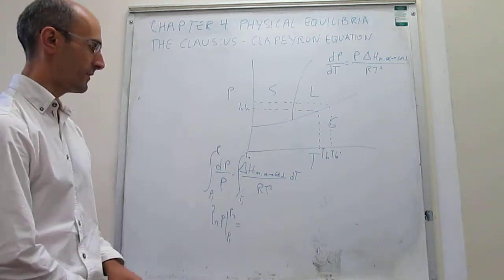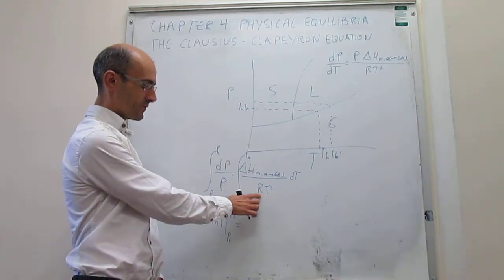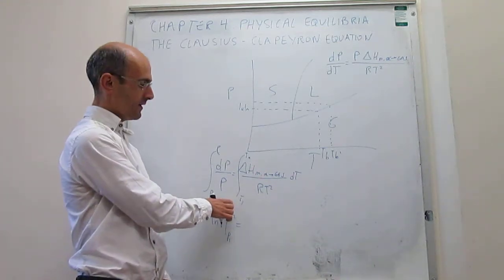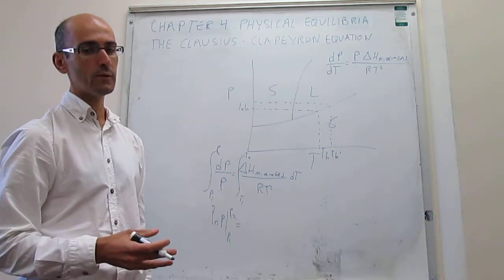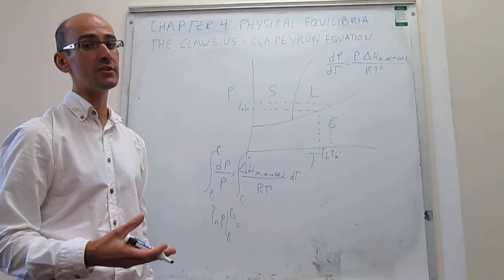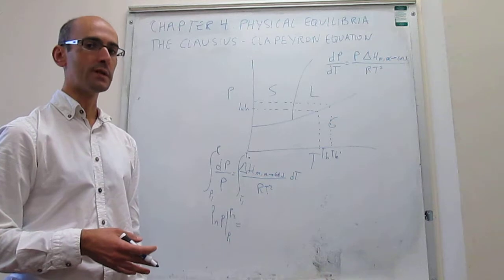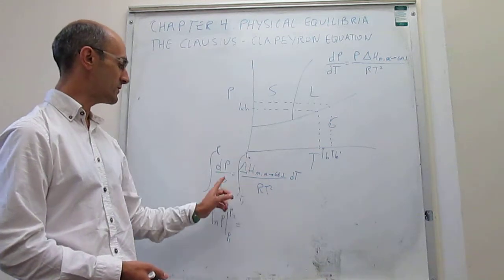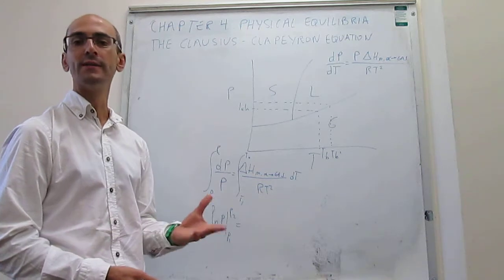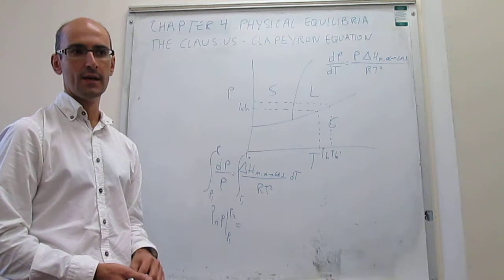We have to figure out what the integral of this second term would be. R is a constant, so we can factor it out. We also have the enthalpy of the phase transition. The enthalpy changes as we change the conditions, but the variation tends to be quite small, especially if your changes in temperature from T1 to T2 and pressure are relatively small, say maybe 10 or 20 degrees.